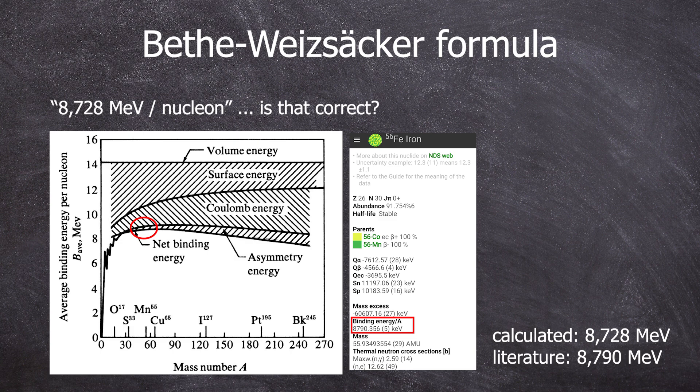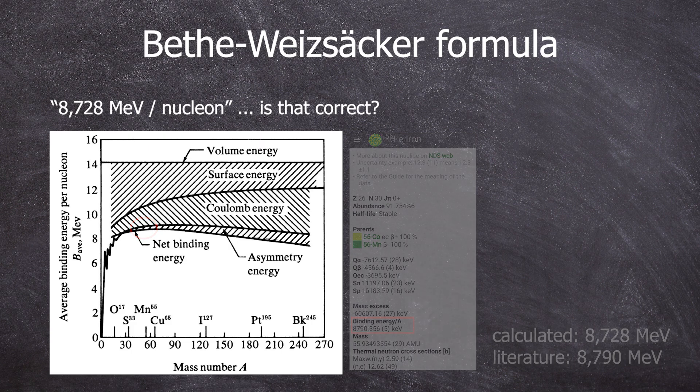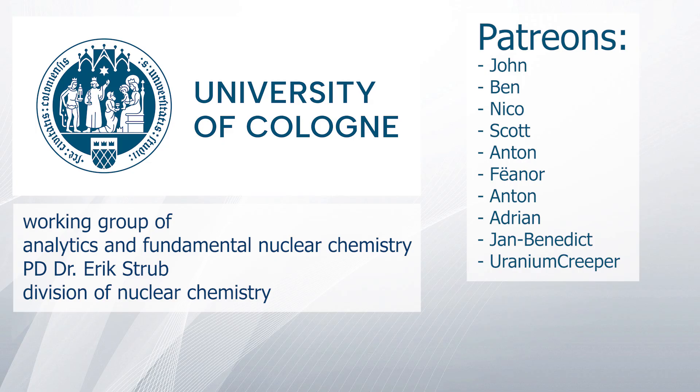With this, you can already approach the binding energy of even unstable nuclides quite well. If you want to practice doing these calculations, I would recommend taking heavier nuclides than calcium and preferably not double magic nuclides. Otherwise, you will deviate a bit too much from the literature values. A special thanks goes to the Working Group of Analytics and Fundamental Nuclear Chemistry from Dr. Erik Strupp and the Division of Nuclear Chemistry at the University of Cologne and to my Patreons. With that being said, goodbye!